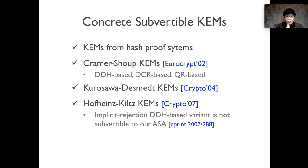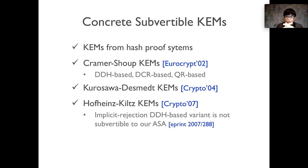Our attack covers a wide range of KEMs, including the generic construction from the hash-proof system and concrete KEMs derived from popular PKE schemes such as the Cramer-Shoup scheme, the Kurosawa-Desmedt scheme, and the Hofheinz-Kiltz scheme. We remark that some constructions are not susceptible to our attack as they do not exhibit the identified structural weakness, and we provide more details about these constructions in our full paper.